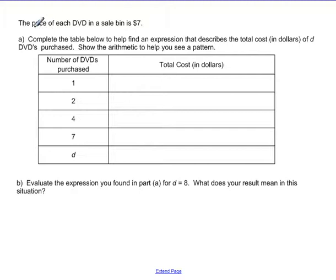So let's take a look and think about the scenario here. We've got a sale bin of DVDs. You may have seen this when you're at the store. This is saying that each DVD in the bin is going to cost $7. And so let's say that we're going to purchase one DVD. Well, in your brain, you say, well, of course, I would pay $7 because I just bought one. So the total cost in dollars would be $7.